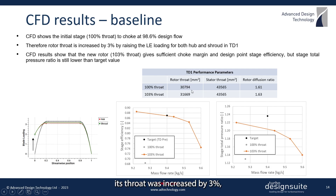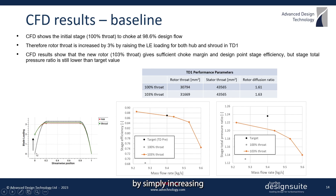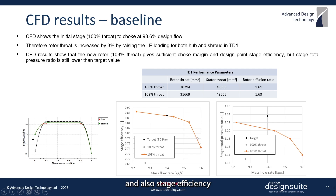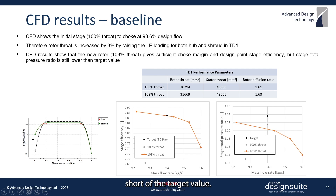The rotor throat was increased by three percent, which is very easy to do in TD1 by simply increasing the leading edge loading like this. As the orange curve shows, this higher throat resulted in sufficient choke margin and also stage efficiency at the design point, but the total pressure ratio was still falling short of the target value.